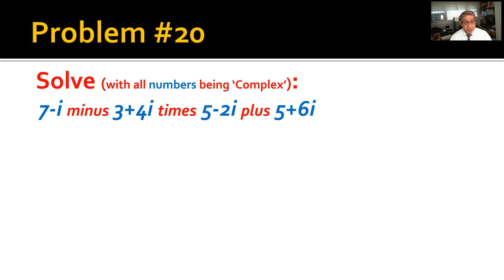Problem 20: Solve with all numbers being complex: (7 - i) - (3 + 4i) × (5 - 2i) + (5 + 6i). The possible answers are shown.